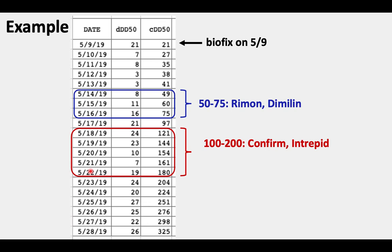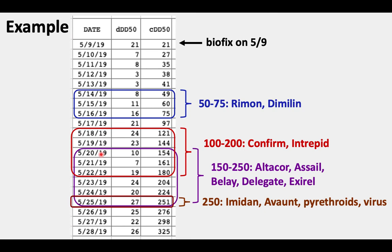Of course, the general rule is you have to consider factors like the weather and your labor availability. Usually, if you're in your target period and the weather is good and your labor is good, it's better to go ahead and apply as soon as you can. If you wait too long into the end of the ideal period and then it rains or you don't have the labor available, you're not going to get your ideal timing. If you were going to apply Altacor, Assail, Belay, Delegate, or Exirel, you could have applied those ideally anywhere between the 20th and 25th of May.